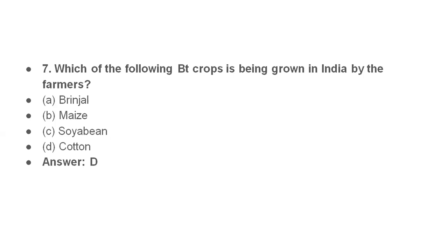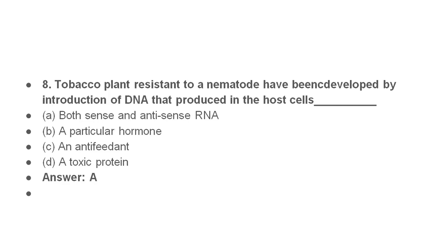Bt crops are being grown in India by farmers. The first Bt crop to be grown is Bt cotton, which uses Bacillus thuringiensis. The tobacco plant resistant to the nematode Meloidogyne incognita was developed by introducing DNA that produces both sense and antisense RNA in host cells, making the tobacco plant resistant to nematodes.